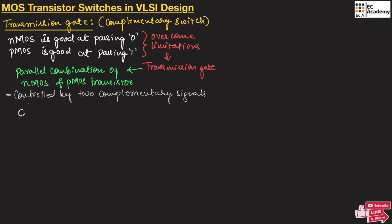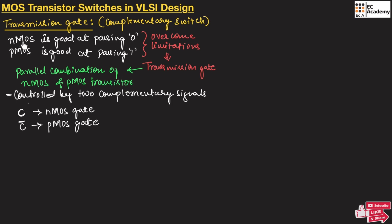Control signal C goes to the NMOS gate to control the NMOS transistor, and C-bar goes to the PMOS gate to control the PMOS transistor. NMOS and PMOS are used in parallel combination to form the transmission gate, along with two complementary control signals C and C-bar. Since C is applied to the gate of NMOS and C-bar is applied to the gate of PMOS, it is also known as a complementary switch.